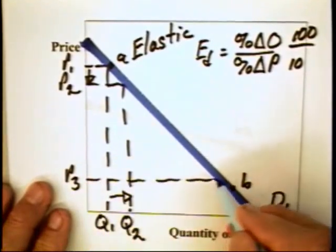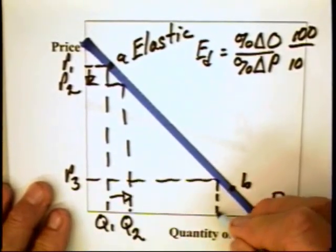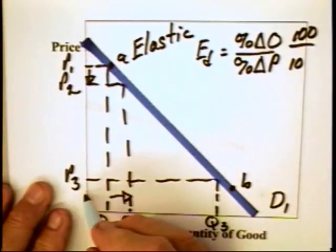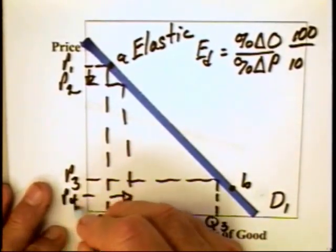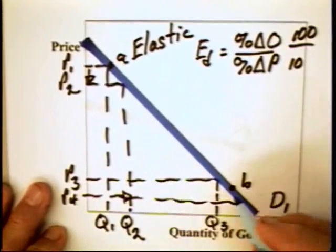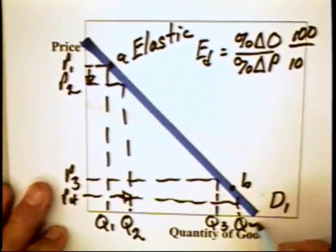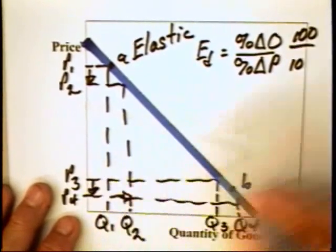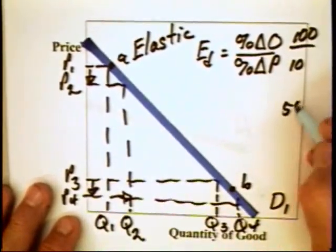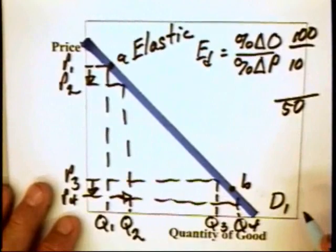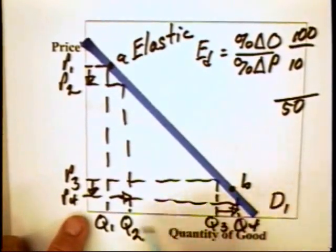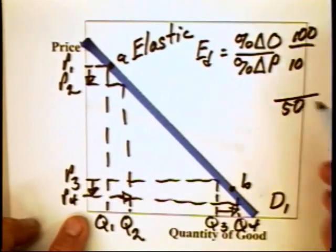But suppose we take another price, P3. At P3, the quantity demanded will be Q3. If we cut the price to P4, the quantity demanded goes to Q4. You cut the price in half. The price reduction is about 50%. You increase the quantity, and again, eyeballing it, it looks to me to be 10%.